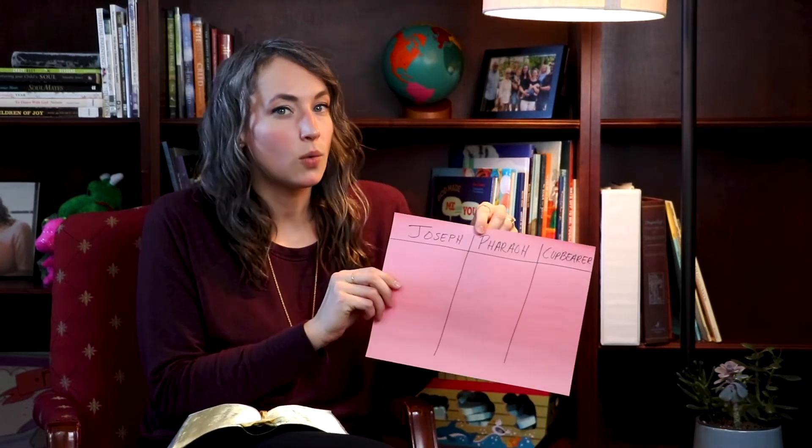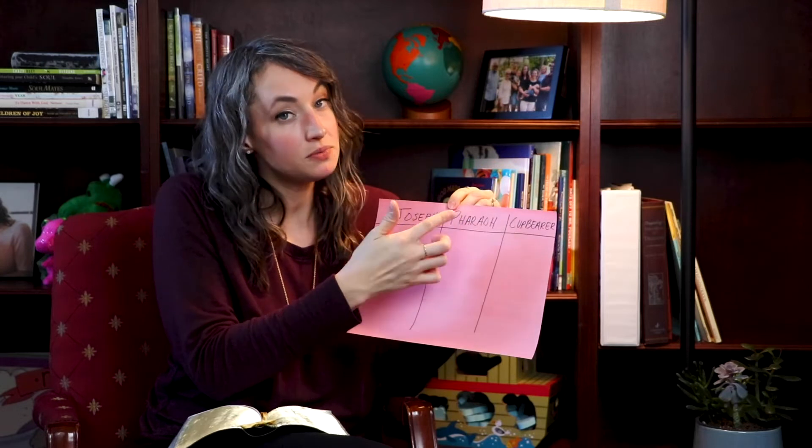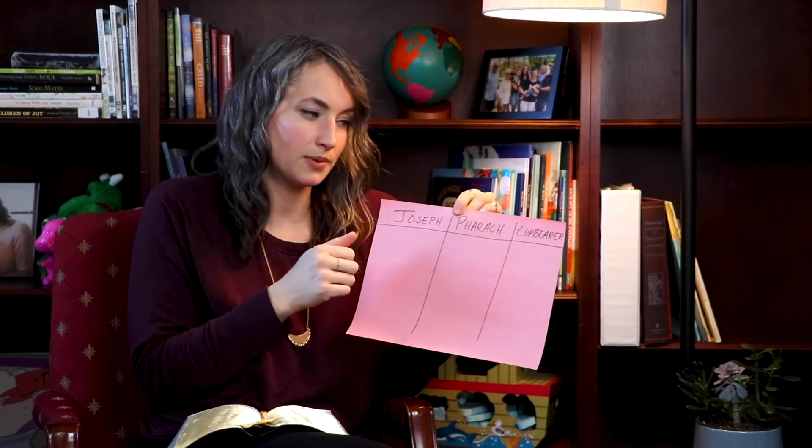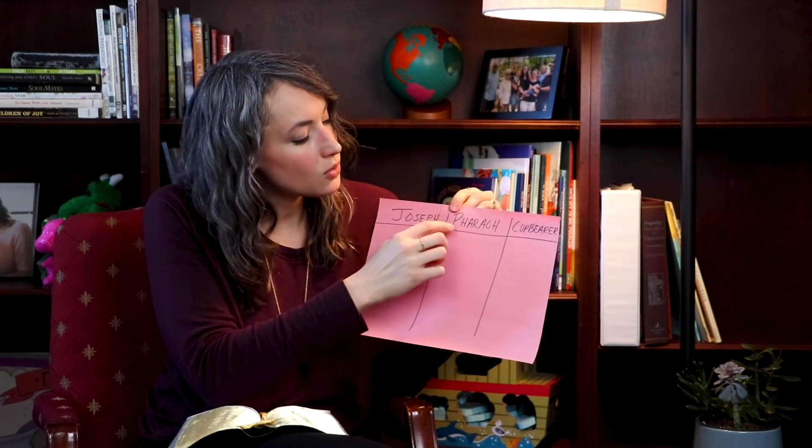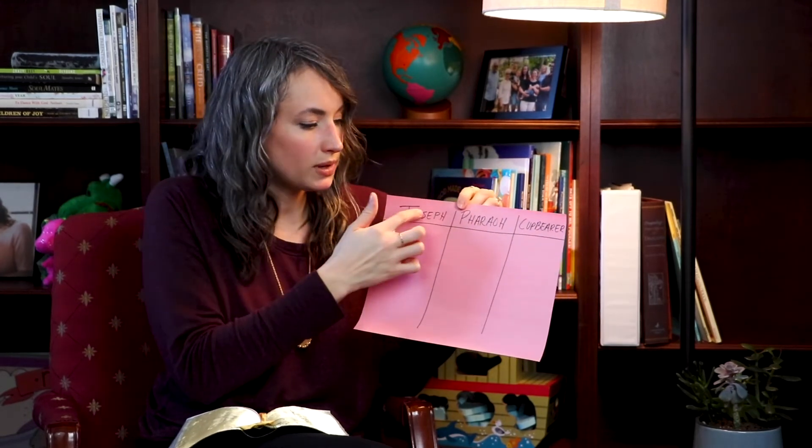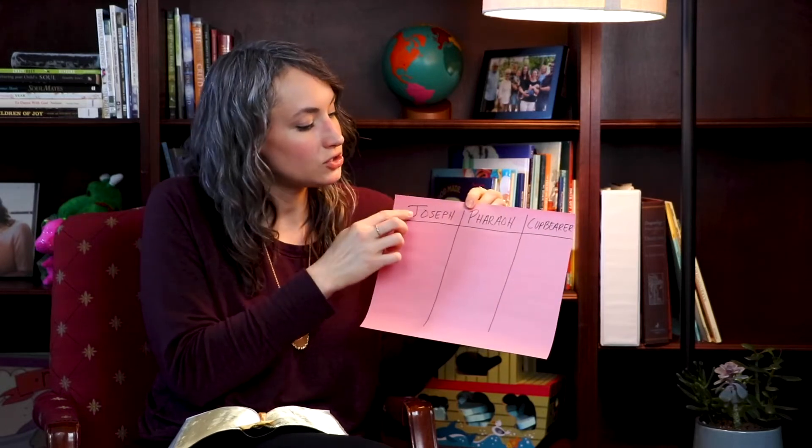Do you know what we need before we get to our story? We need our Bibles. You can also grab your piece of paper and something to write with. If you need to, you can pause the video while you get those things. On our piece of paper, we are going to want to write the words Joseph, Pharaoh, who was the king, and Cupbearer — that's someone who serves the drinks to Pharaoh. If you don't want to write the words out, you can draw little pictures for each of those.